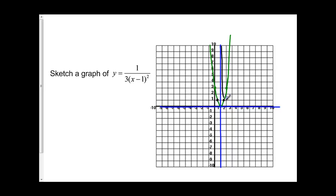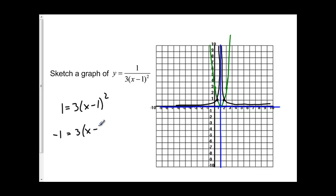I'm going to draw my reciprocal function from the asymptote through the invariant point over to the other asymptote, and the same thing on the other side — from the asymptote through the invariant point over to the other asymptote. If I wanted the exact value of the invariant point, I would solve the equation where the function equals 1, or equals negative 1. I don't need to do that now since I've only been asked to graph it graphically.